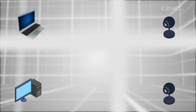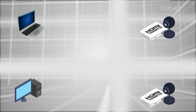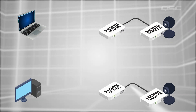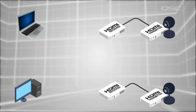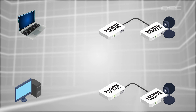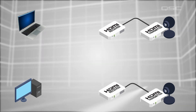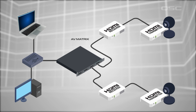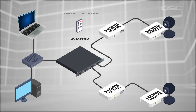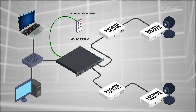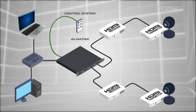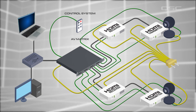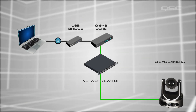Another alternative is to use HDMI cameras, which bring their own pain points. HDMI is also impossible to field terminate, and the room now requires an HDMI video matrix, which will require a control system of its own — not to mention that you're running HDMI, control, and power. All of this can be made much easier.